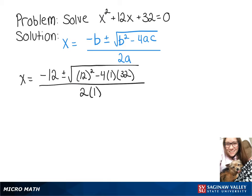So simplifying that will give us negative 12 plus or minus the square root of 144 minus 128 over 2.